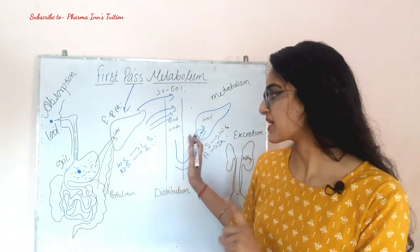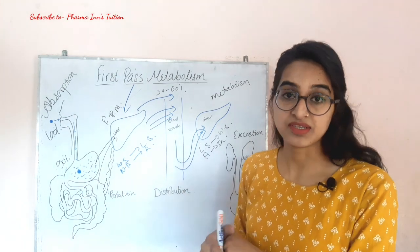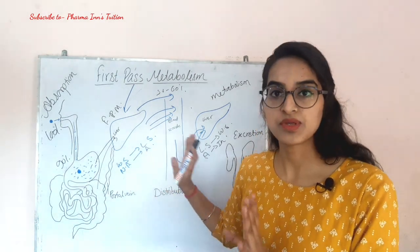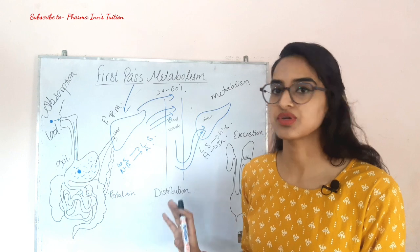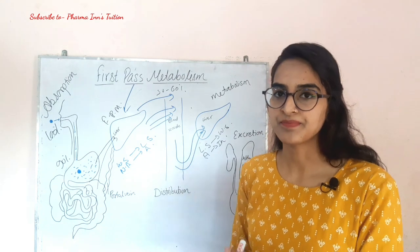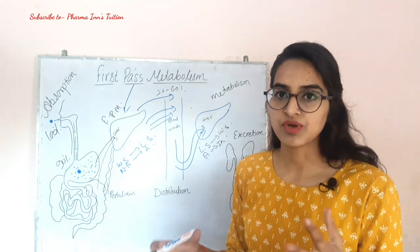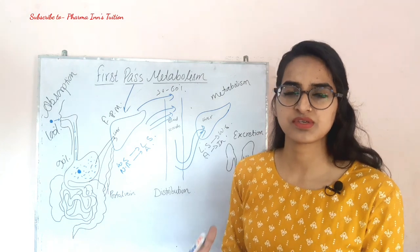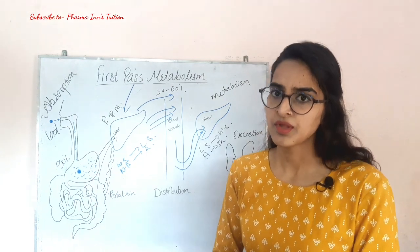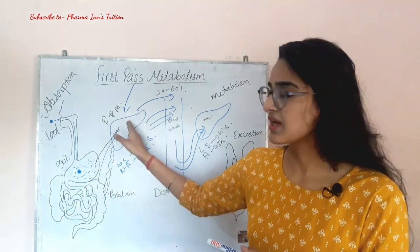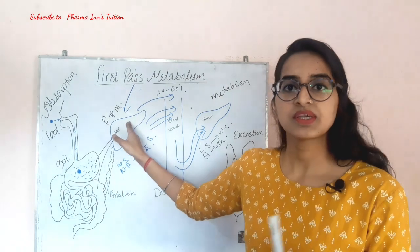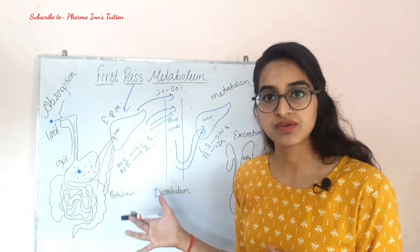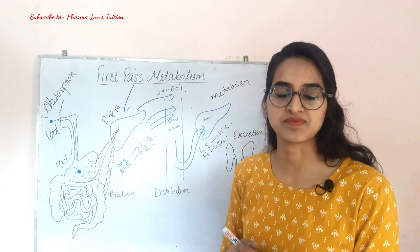However, in severe liver disease, the drug will not be able to convert into its activated form, so it will not produce a good therapeutic action. The third factor is drug-drug interactions — when we give two drugs together, the liver focuses on metabolizing one drug through first-pass metabolism, and the other drug may skip first-pass metabolism.